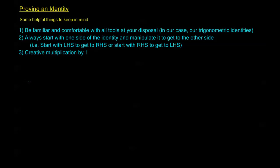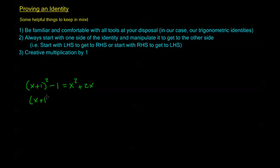Let's say we want to verify the identity: x plus 1 squared minus 1 is equal to x squared plus 2x. Now let's say we want to prove this identity and instead of following my advice we just start with x plus 1 squared minus 1 equals x squared plus 2x. We can add one to both sides to get x plus 1 squared equals x squared plus 2x plus 1. Then we can factor the right hand side to get x plus 1 squared equals x plus 1 squared.